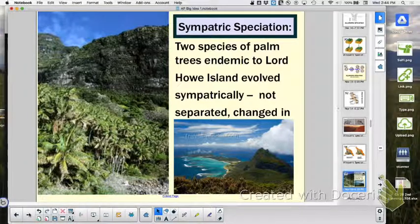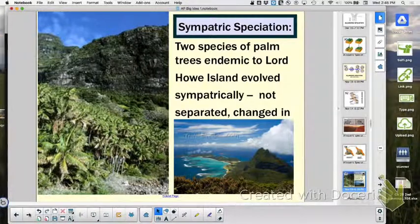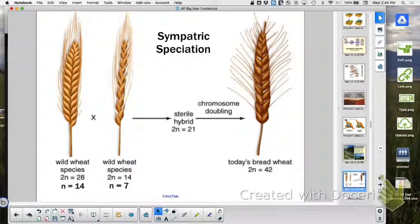An example of sympatric speciation is on Lord Howe Island, and there are some palms that have been altered. With plants, that is more likely to happen because they can take those fluctuations and they can have something like polyploidy and they're okay. For you and I, we get one chromosome wrong and we usually have some issues associated with that. Do you remember this slide? Work from left to right.